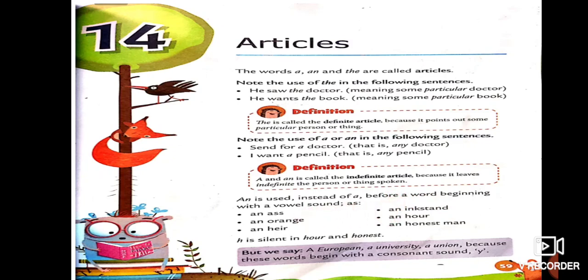Here, examples are given. A European, a university. See, here, in these words, there is consonant sound here. European, Y, consonant sound. A university. Here, also, Y sound there. Then, A union. Because, these words begin with a consonant sound. Y. So, I hope you understood about articles.